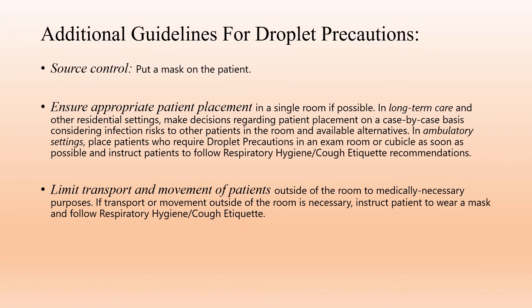Additional guidelines for droplet precautions. Source control: put a mask on the patient. Ensure appropriate patient placement in a single room if possible. In long-term care and other residential settings, make decisions regarding patient placement on a case-by-case basis considering infection risk to other patients in the room and available alternatives. In ambulatory settings, place patients who require droplet precautions in an exam room or cubicle as soon as possible and instruct patients to follow respiratory hygiene and cough etiquette recommendations.